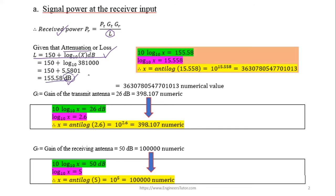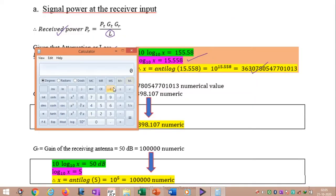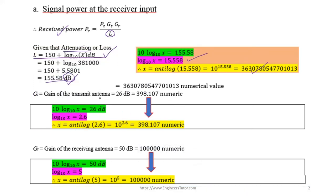The dB value must be converted to a numerical value. For example, to convert approximately 15.56 dB to a numerical value, follow the standard steps for dB-to-numerical conversion. Similarly, convert the antenna gains from dB values to numerical values before substituting into the equation.